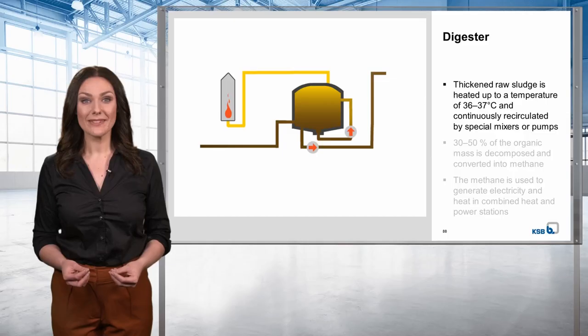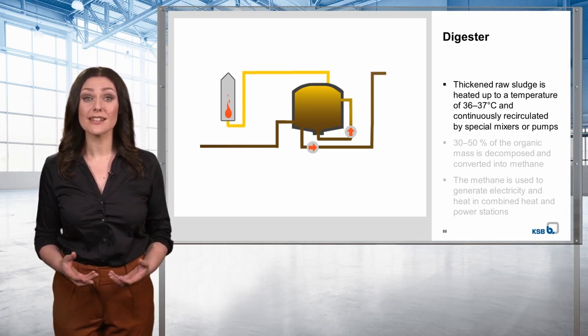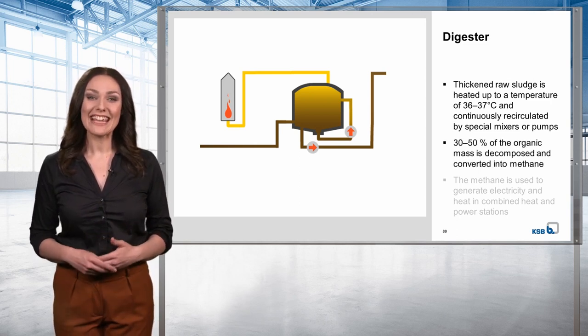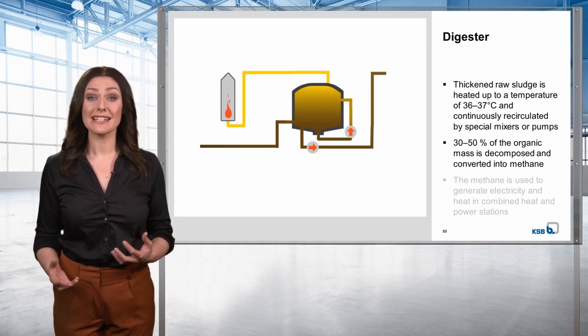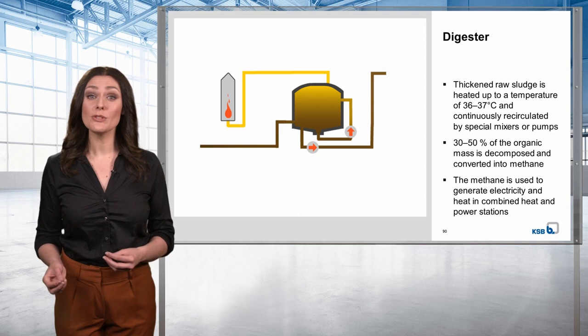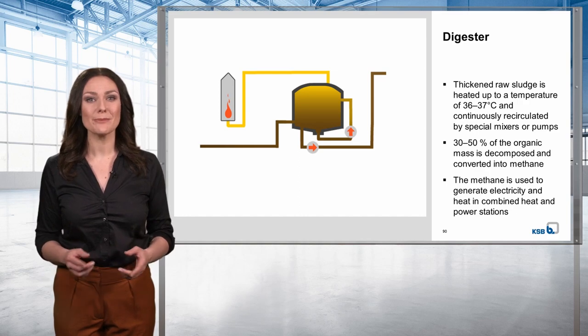Large wastewater treatment plants are equipped with a digestion tank in addition. In the digestion tank, already thickened raw sludge is heated up to a temperature of 36 to 37 degrees Celsius and continuously recirculated by special mixers or pumps. In the digestion process, part of the organic mass — approximately 30 to 50 percent — is decomposed and converted into methane. The gas produced is then used to generate electricity and heat in combined heat and power stations for the wastewater treatment plant. After the digestion process, the so-called digested sludge is removed from the tank and thickened once again, and is then usually burned.